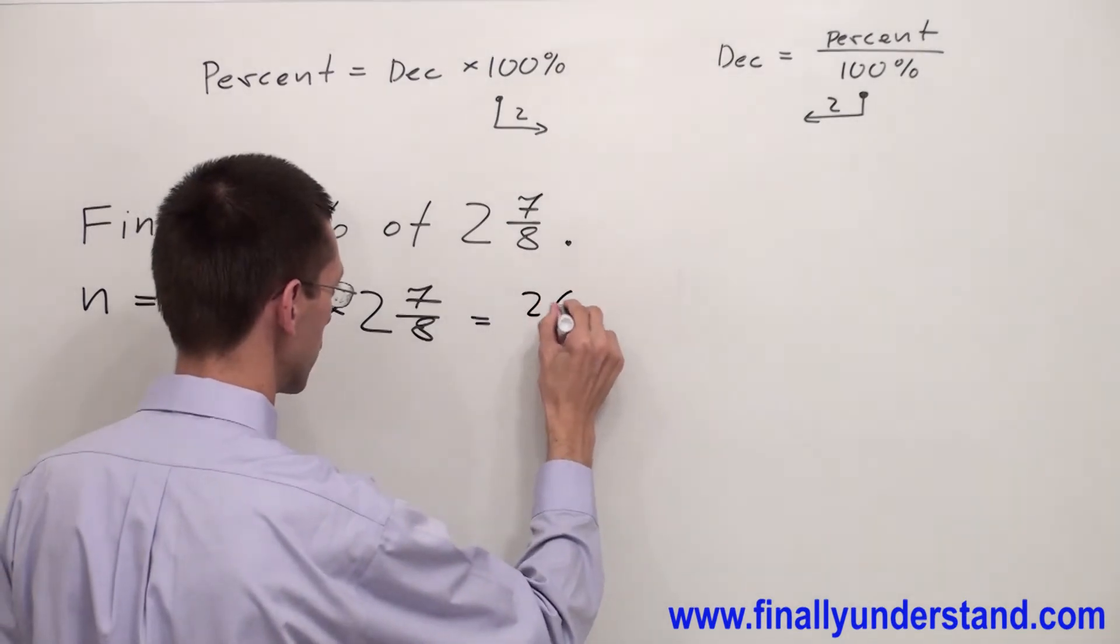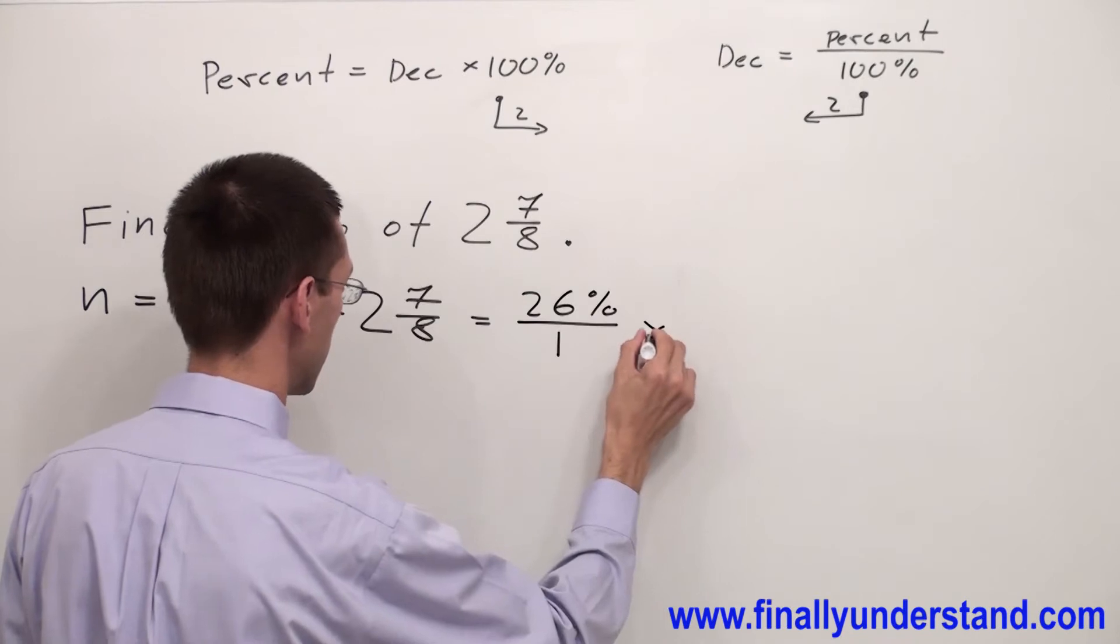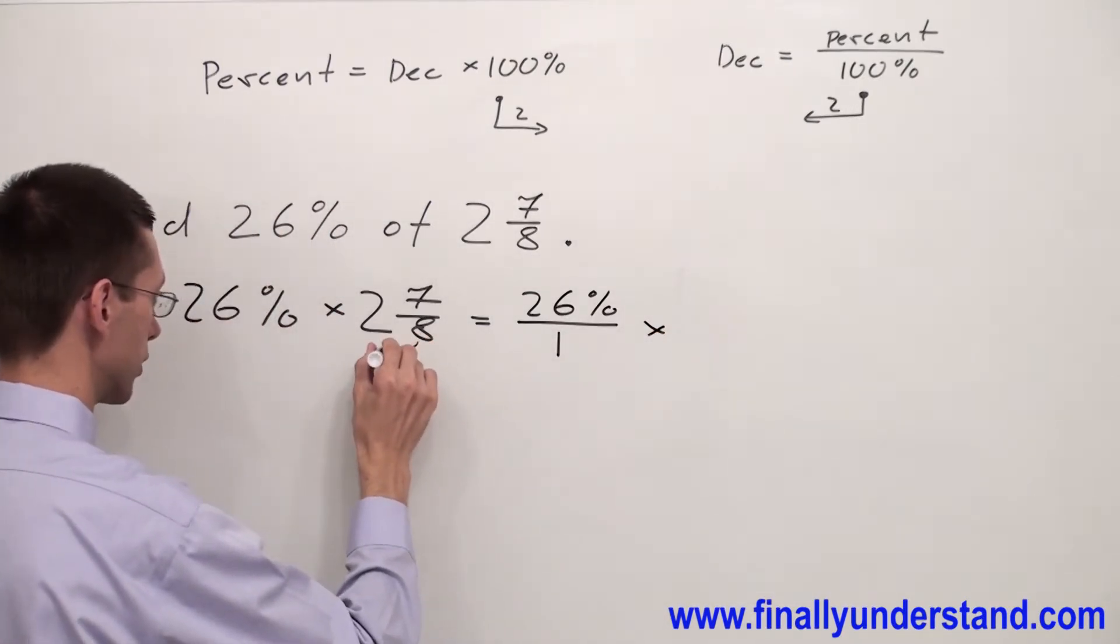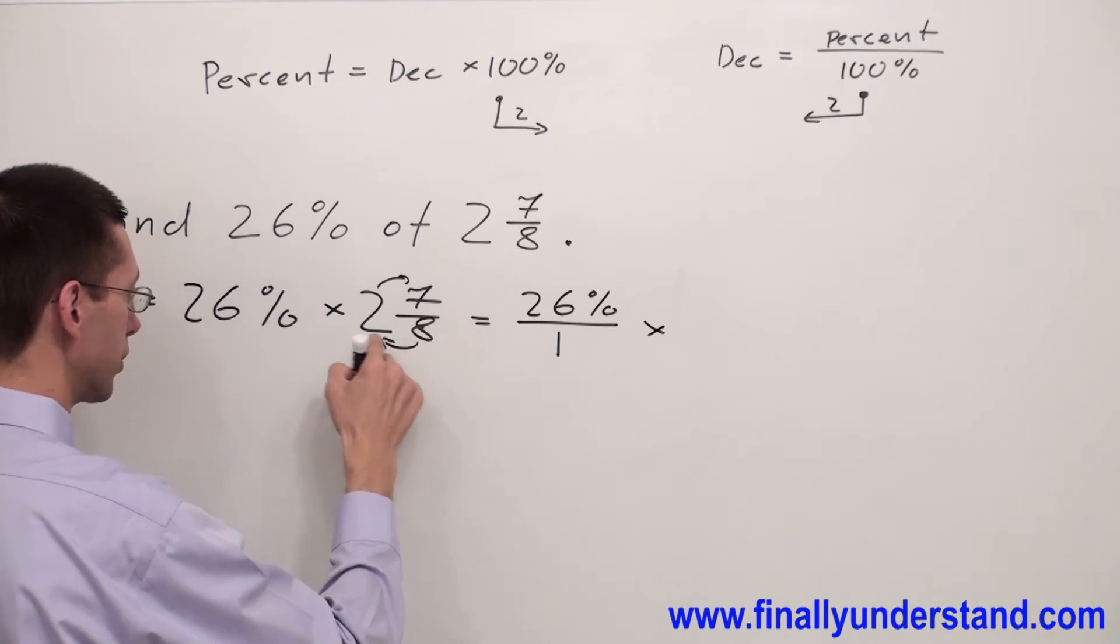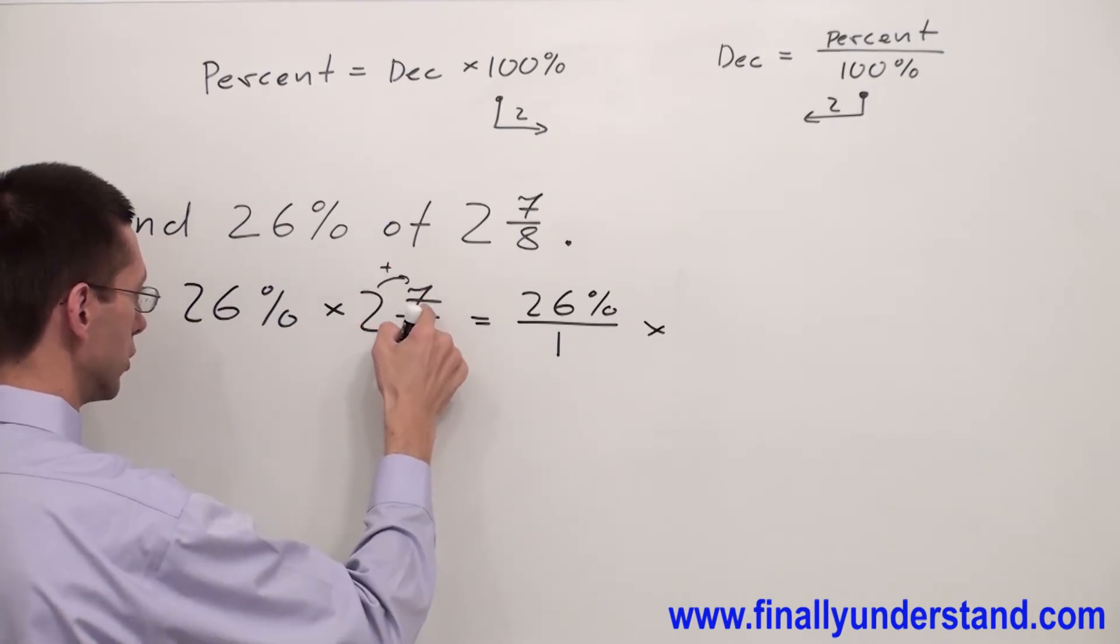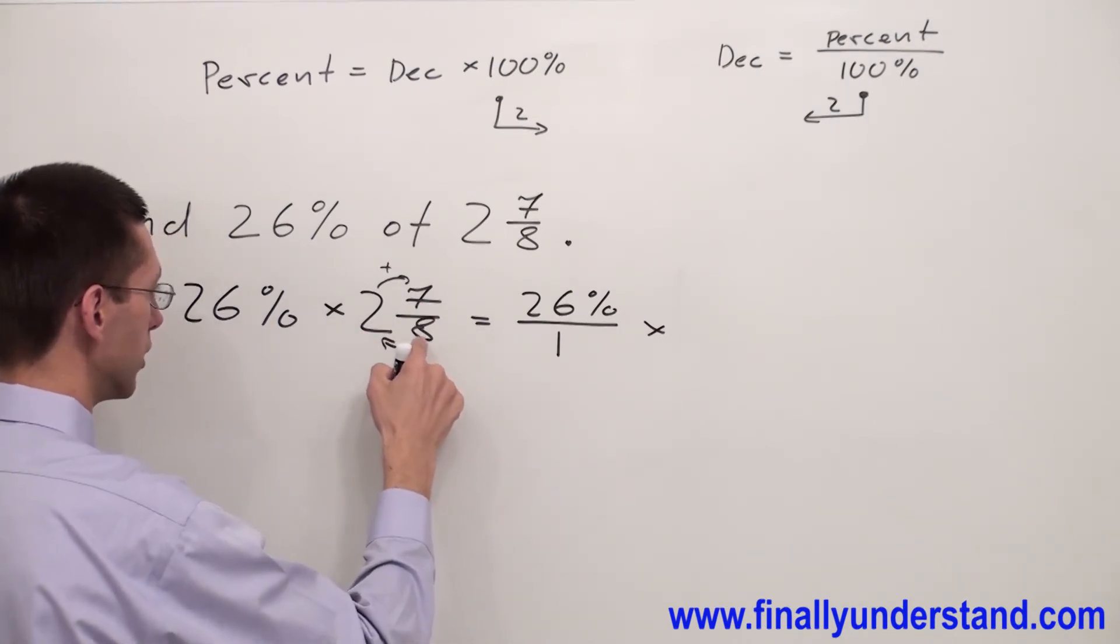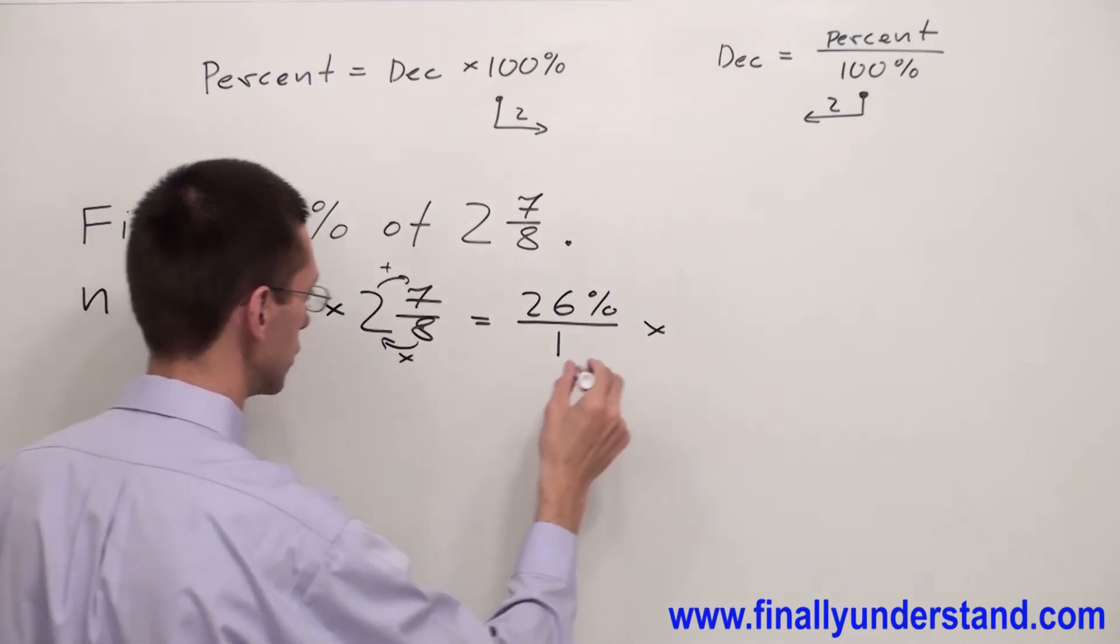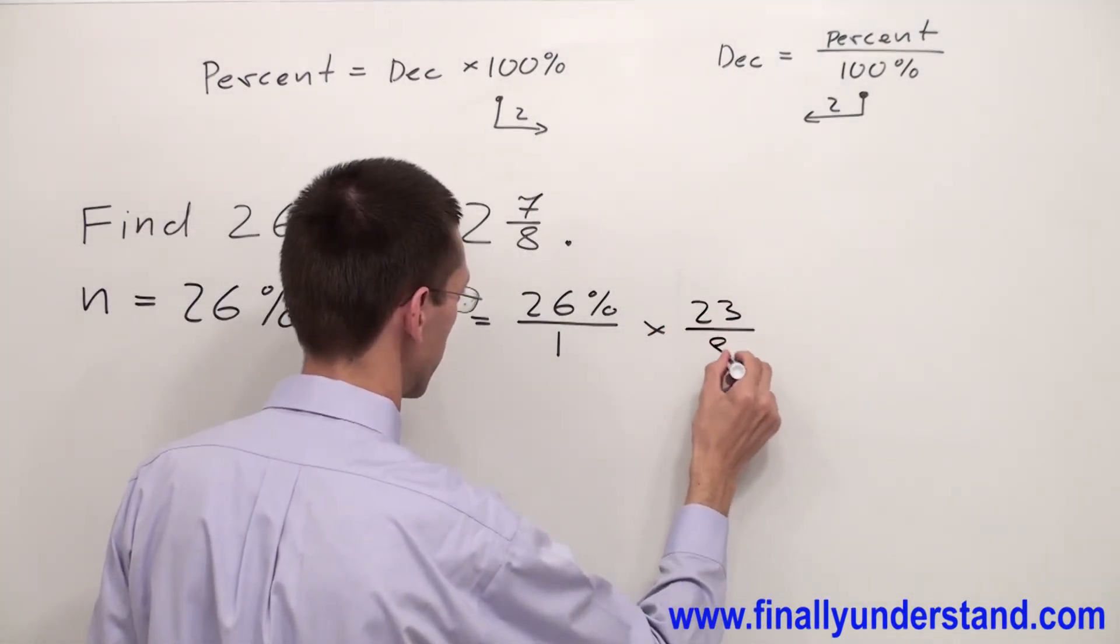So I have 26% over 1 - this is my improper fraction - times I have to convert the mixed number to improper fraction by multiplying denominator by the whole number, and the result I have to add to the numerator. So I have 2 times 8 is 16 plus 7 is 23, giving me 23 over 8.